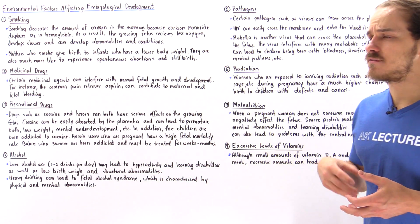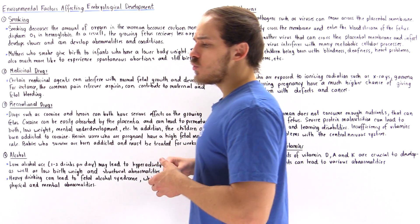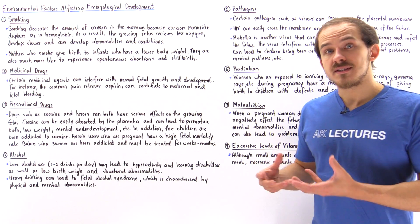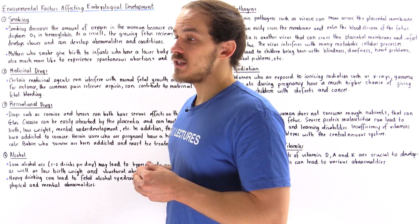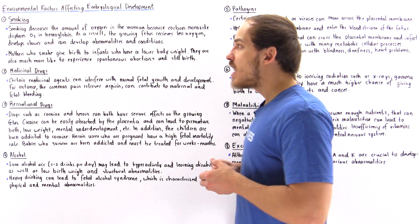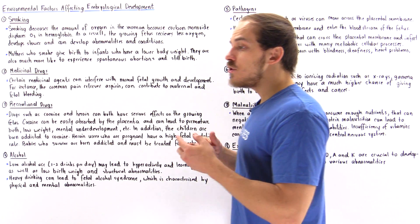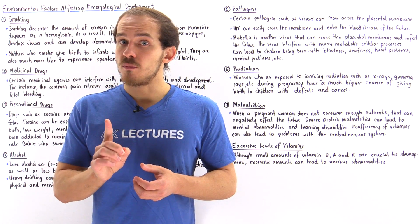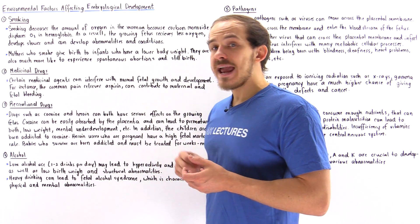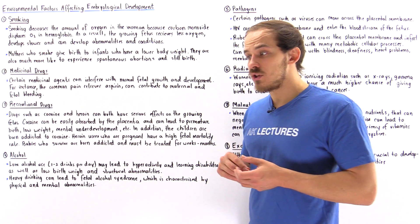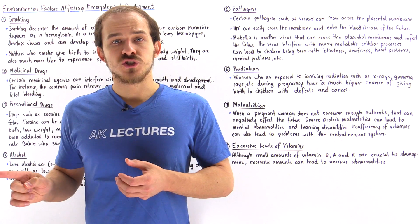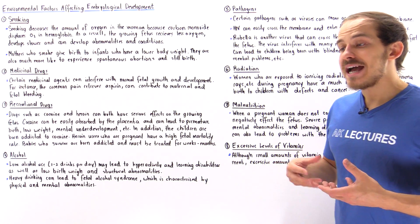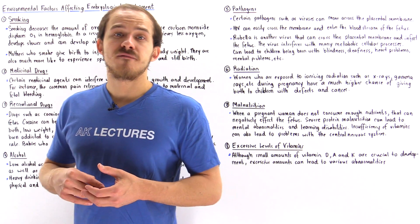Cigarettes also contain nicotine, which is the addicting agent that causes addiction. As a result, the woman becomes addicted and that fetus can also become addicted to nicotine. On top of that, when an individual smokes, one other byproduct is carbon monoxide, and carbon monoxide is toxic to hemoglobin — the carrier of oxygen. Once the woman inhales carbon monoxide, it can bind to hemoglobin and decrease the affinity of hemoglobin for oxygen, lowering the amount of oxygen content in the blood of that mother, which in turn lowers the amount of oxygen received by that developing fetus.